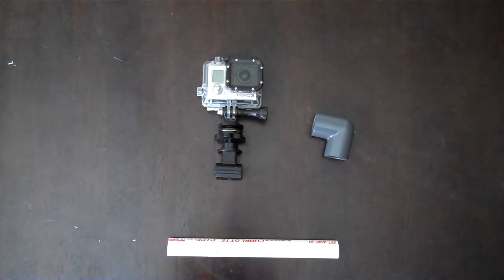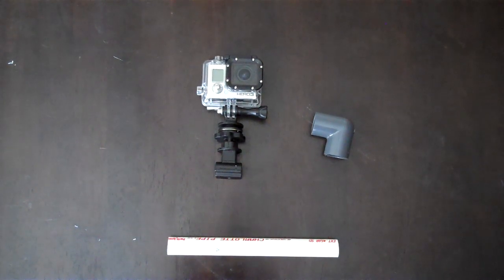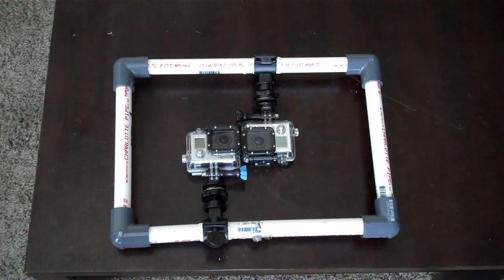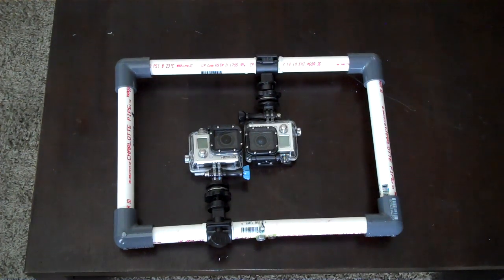You can make it smaller if you would like as long as you assure that the cameras line up perfectly. I made mine this big for stability while recording. This size also makes it easy to remove the cameras and their housings. You can also buy a ¼ inch nut so that you can mount the system to a tripod.